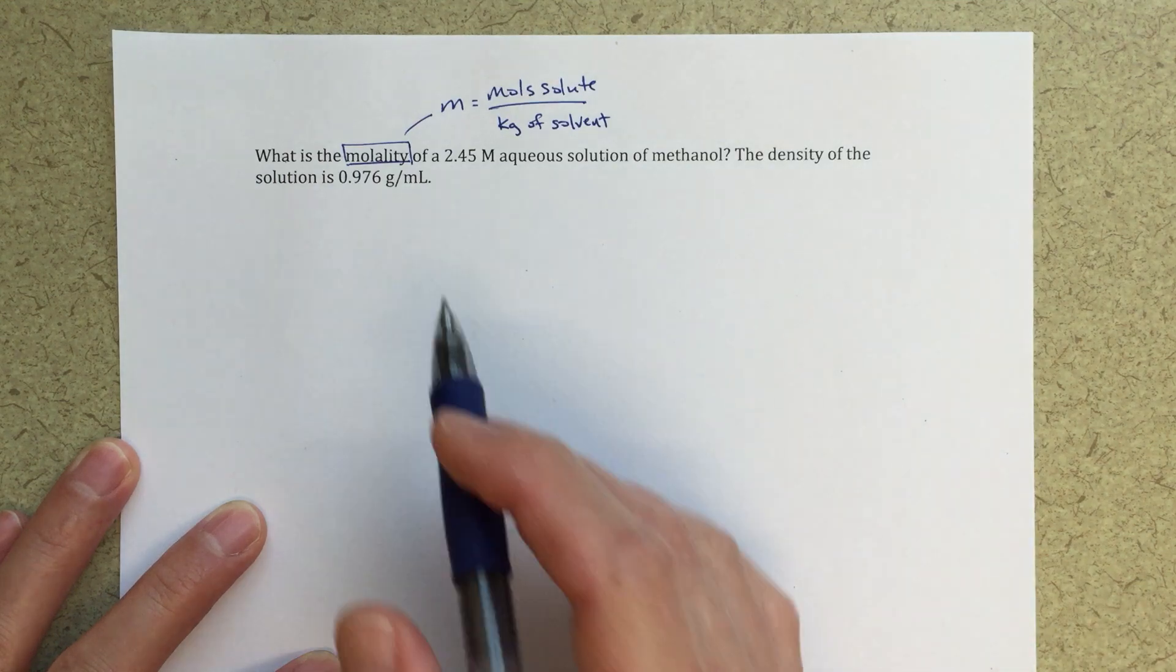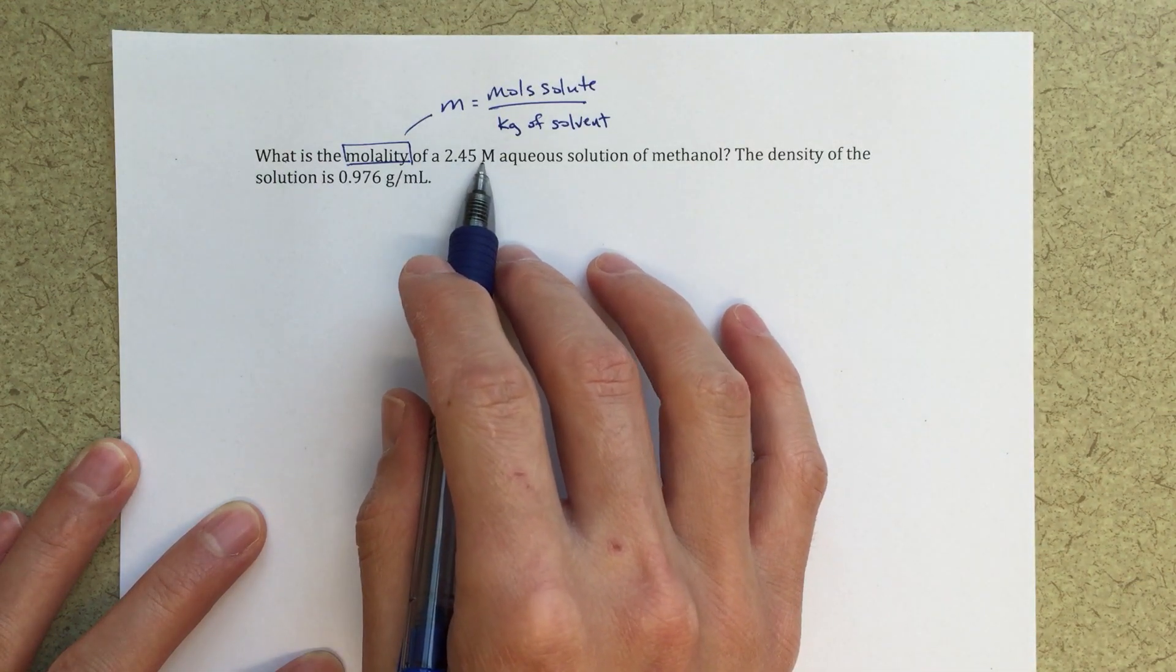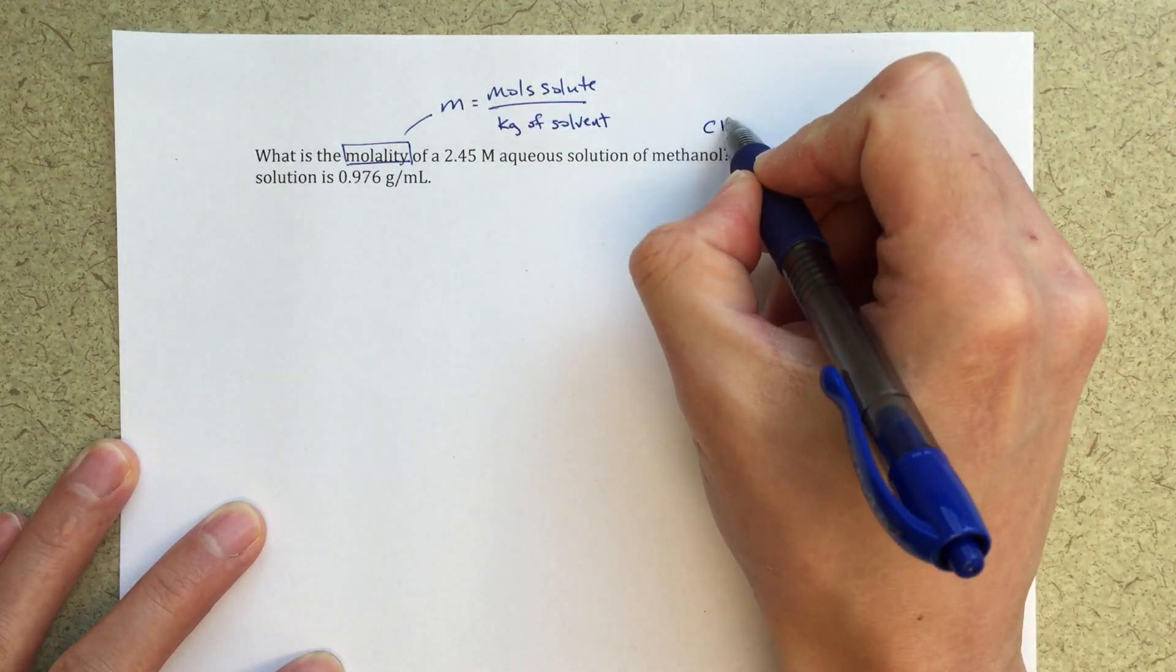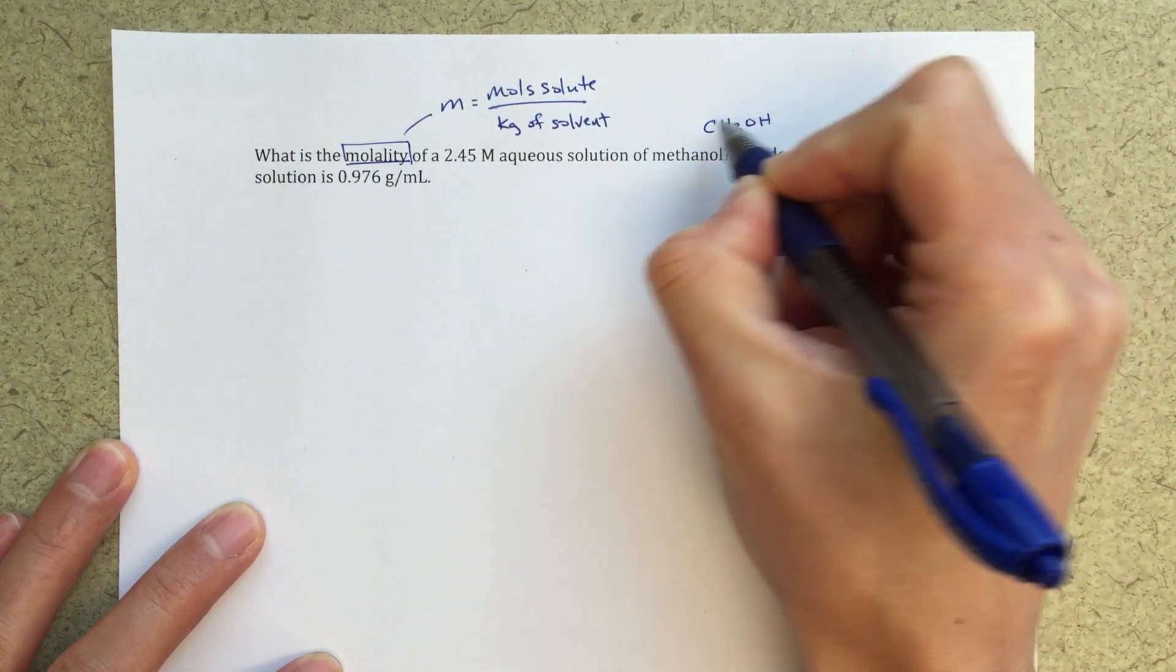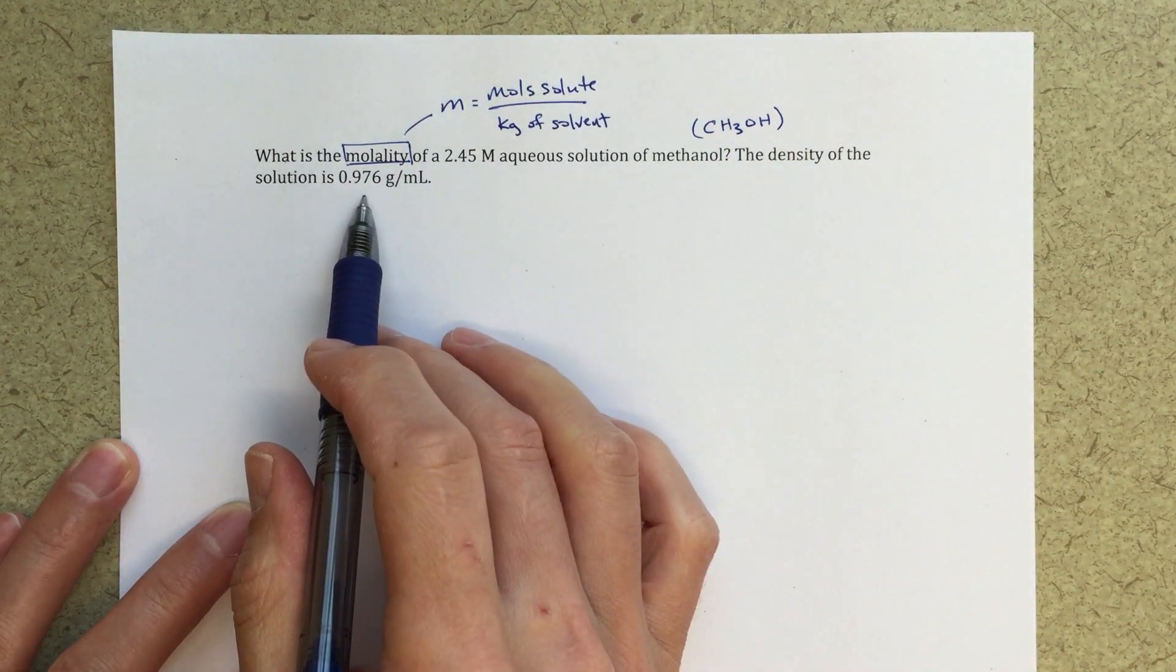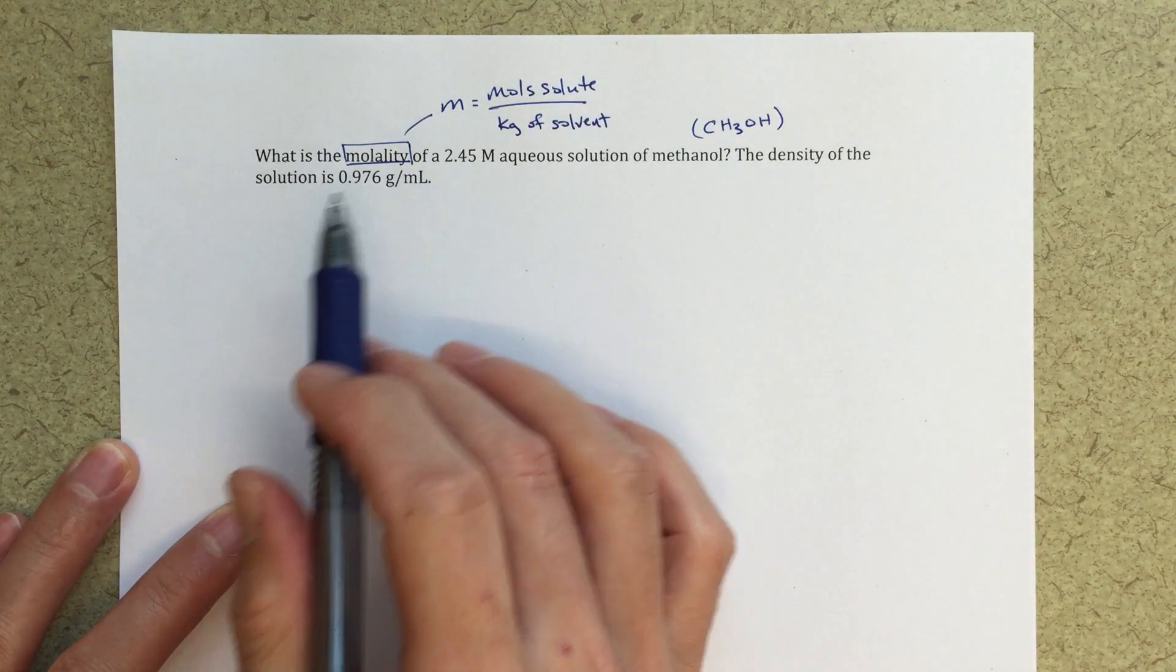Getting started, we've got a 2.45 molar, so that's moles per liter, aqueous solution of methanol. Methanol is CH3OH, and it tells us the density of the entire solution is 0.976 grams per milliliter.